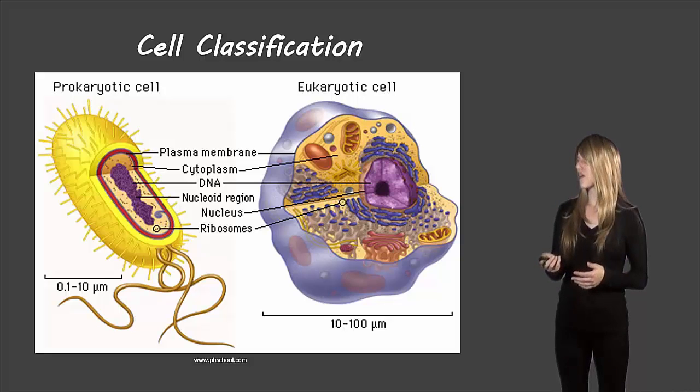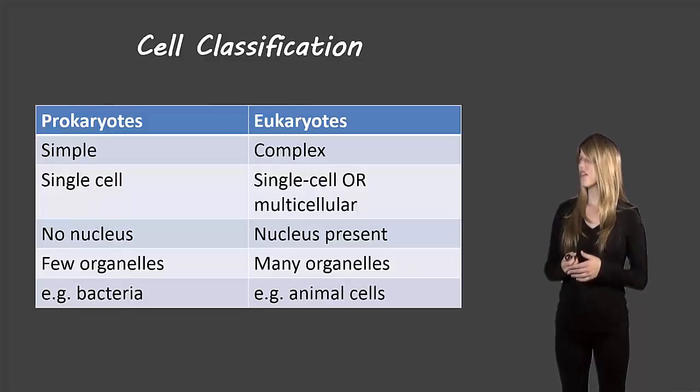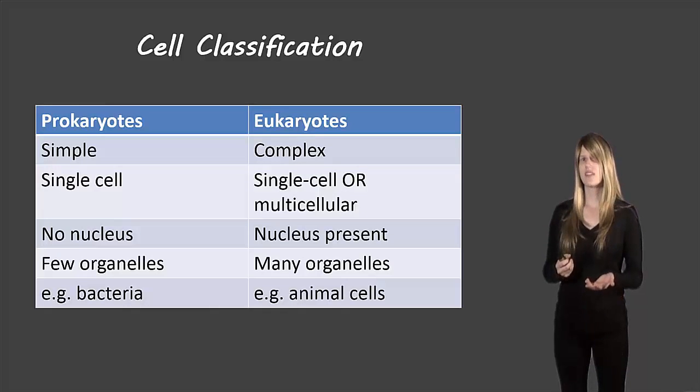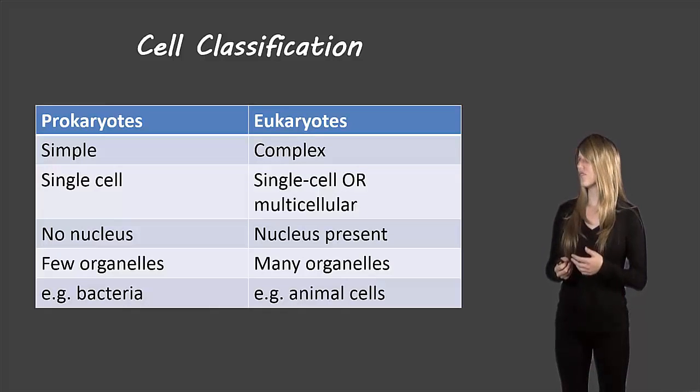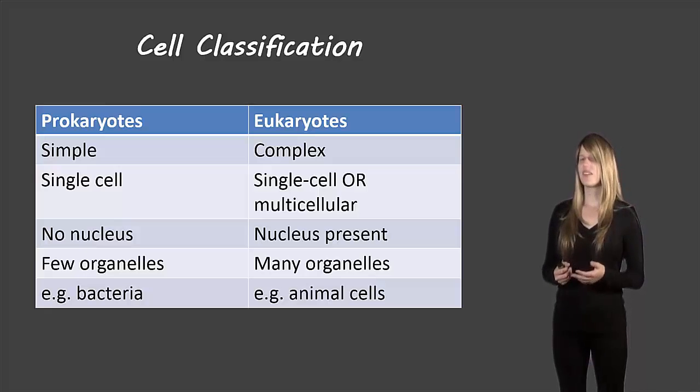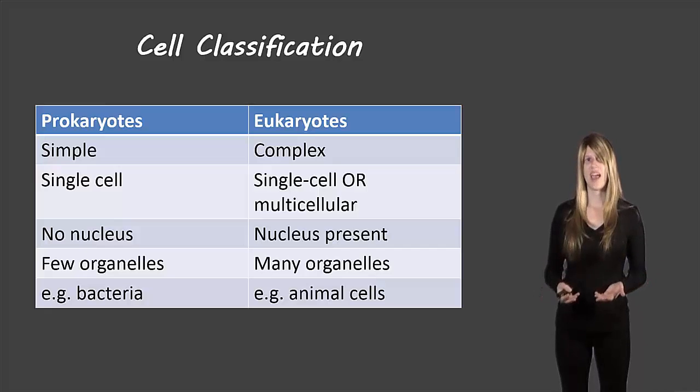Let's take a look at some of the different comparisons. Prokaryotes or prokaryotic cells are much simpler compared to eukaryotes. They are single cellular organisms whereas eukaryotes can be single cellular or multicellular organisms. There is no nucleus in a prokaryotic cell. There are very few different types of organelles in a prokaryotic cell. An example: a prokaryotic cell will be like a bacteria. A eukaryotic cell will be for example like an animal cell.